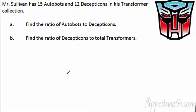Ratios should be written in the simplest form, which means you might have to reduce some of these. Reducing like a fraction. Let's look at Mr. Sullivan and his Autobots. We have 15 Autobots. They're the good guys, if you remember.